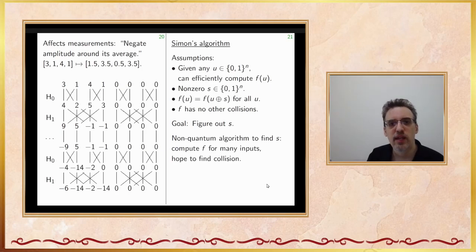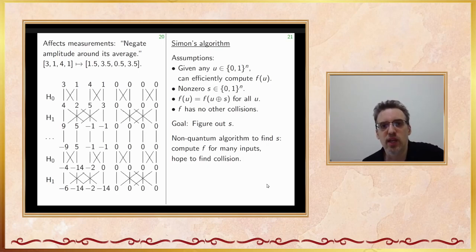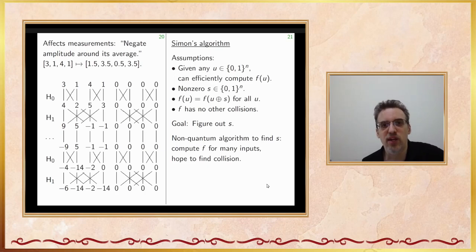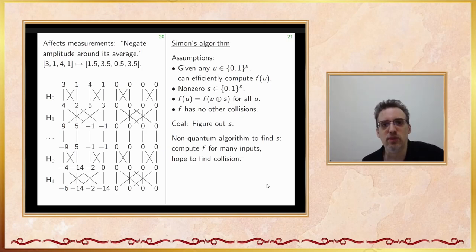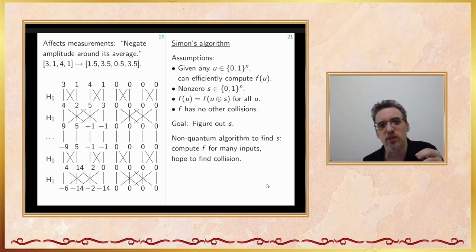We're trying to figure out this secret s. Without a quantum computer, you would try plugging in inputs u and searching for a collision — two different u's that give the same f output. By the birthday paradox, after roughly the square root of 2-to-the-n evaluations, you expect to find some collision. Once you find u and u' with f(u) = f(u'), then u XOR u' = s. This is a more intriguing combinatorial problem because the pattern of inputs you feed in matters.